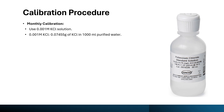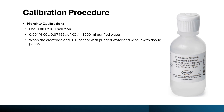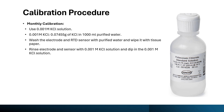This will prepare the 0.001 M KCl solution. After that, wash the electrode and RTD sensor with purified water and wipe with tissue paper. Then rinse the electrode and sensor with 0.001 M KCl solution and dip into the 0.001 M KCl solution. Before taking the reading, rinse the sensor and electrode with the KCl solution for saturation purposes.